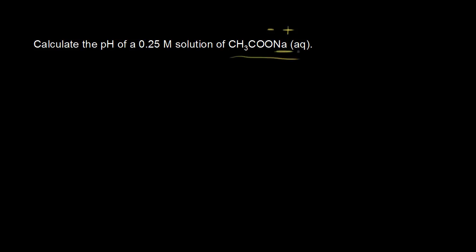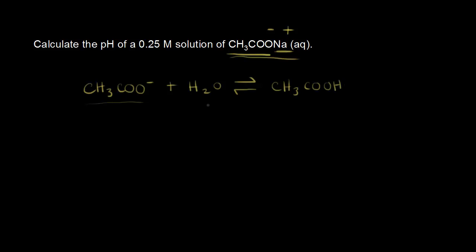The sodium cations aren't going to react with water, but the acetate anions will. The acetate anion is the conjugate base to acetic acid, and it's going to react with water and function as a base — it's going to take a proton from water. Adding H+ to CH3COO- gives CH3COOH, and taking H+ away from H2O gives OH-, the hydroxide ion.